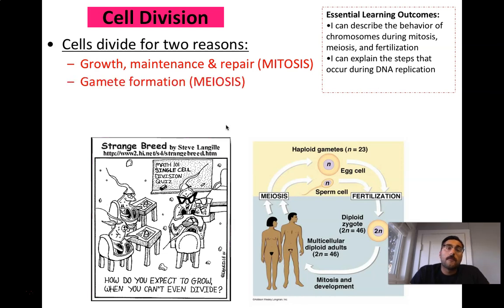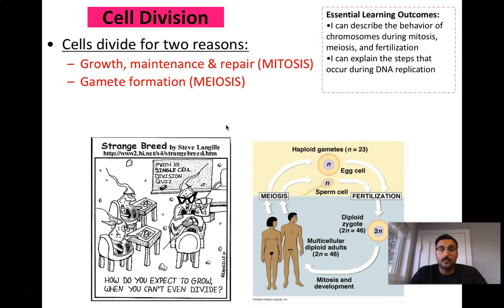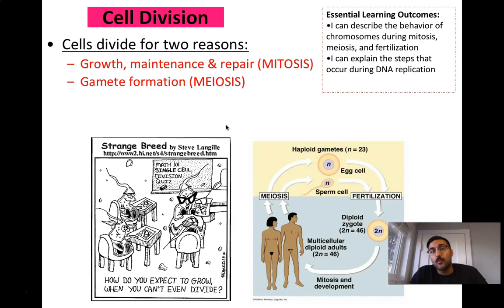The body is going to want to divide so that it can grow and repair, and the body is also going to want to divide certain cells so that it can form what's called gametes — those sex cells, those haploid cells. So if you're a woman, it needs to make more eggs, and if you're a man, you need to make more sperm cells. And so that's through a process called meiosis.